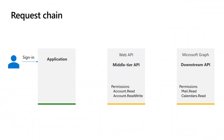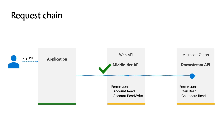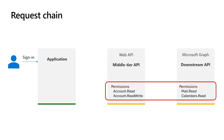The On-Behalf-Of flow, or OBO flow, is used in scenarios where an application calls a web API which in turn calls another web API. Consider the following scenario: a user signs into an application and the application acquires an access token to call a web API you developed. Then the application invokes the web API passing the access token in the HTTP request. However, if the web API tries to call a downstream API — for example, Microsoft Graph — using the same access token, it will fail because each API has its own set of permissions.